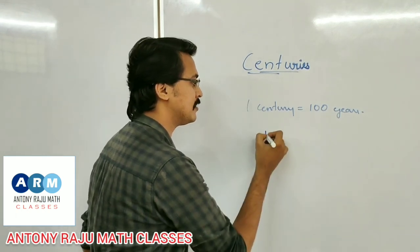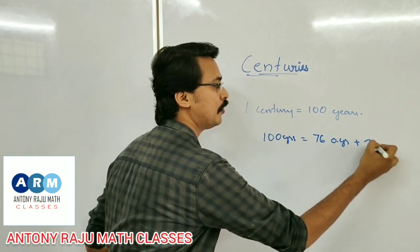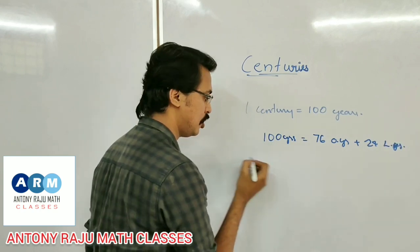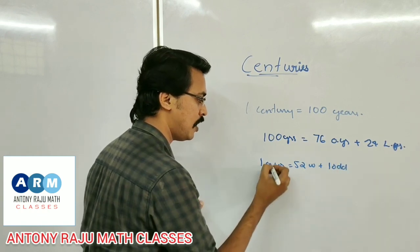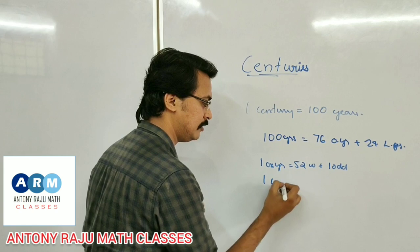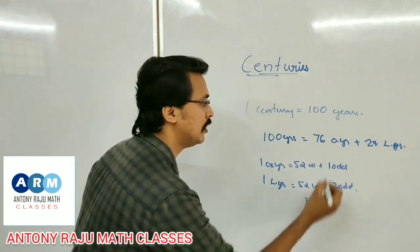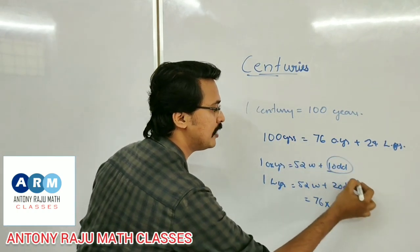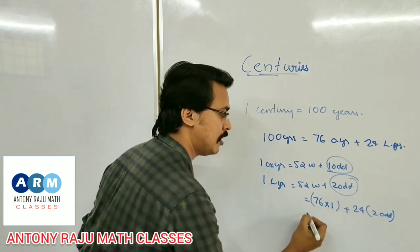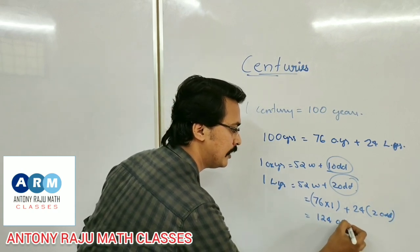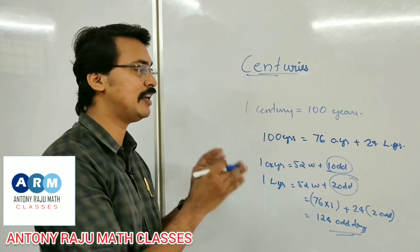In 100 years, there are 76 ordinary years and 24 leap years. One ordinary year is 52 weeks plus 1 odd day, and one leap year is 52 weeks plus 2 odd days. So we substitute: 76 into 1 odd day plus 24 into 2 odd days gives 124 odd days.